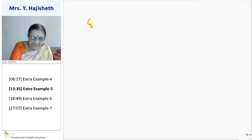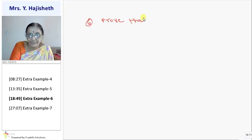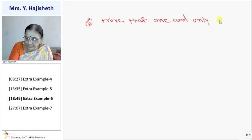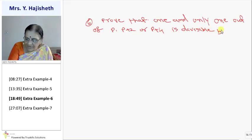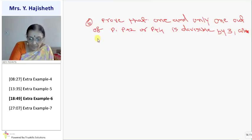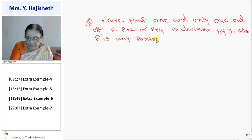Now see, sum number 6. Prove that one and only one out of p, p plus 2, or p plus 4 is divisible by 3. Where p is any positive integer.